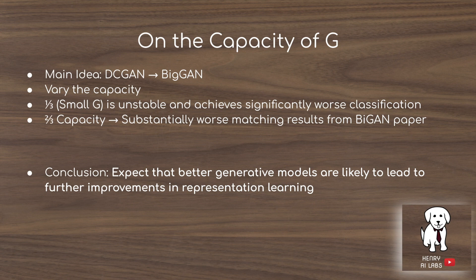The big contribution of the paper is showing how important model capacity is. With one-third of the capacity, the generator is unstable and classification is terrible. At two-thirds capacity, results are again substantially worse. The conclusion from controlling this variable shows that as generative models improve, the BigBiGAN framework is expected to eventually succeed with unsupervised representation learning — potentially even better than labeled samples.